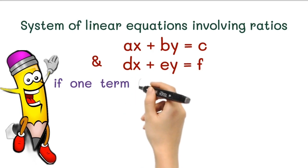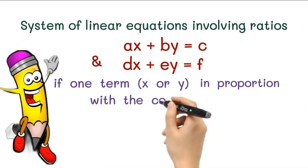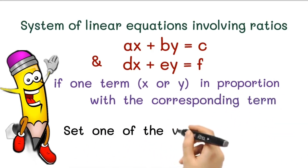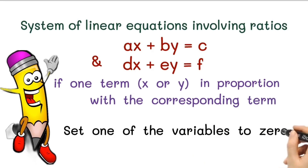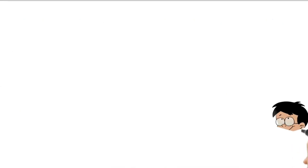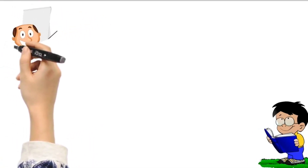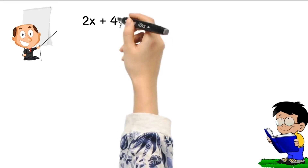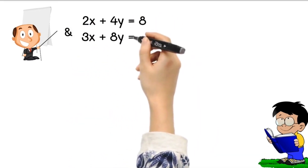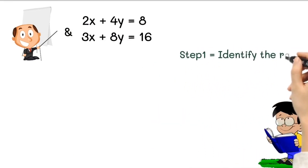According to this sutra, if one term — x or y — is in proportion with the corresponding term in the other equation, then we can set one of the variables to zero to simplify the system. Now let's consider a practical example. Suppose we have the equations 2x plus 4y equals 8 and 3x plus 8y equals 16.